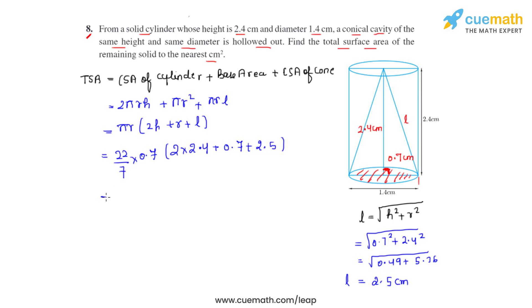Now 7 and 0.7 gets cancelled with 0.1, so 22 when multiplied with 0.1 gives us 2.2. Doing the simplification inside the brackets, we get the answer as 8. So 2.2 times 8 gives us the final answer as 17.6 cm², and this is the total surface area of the remaining solid to the nearest centimeter square.